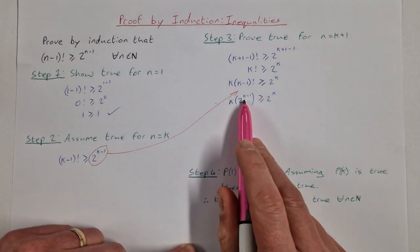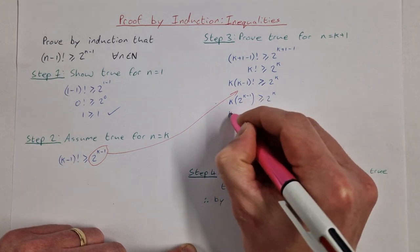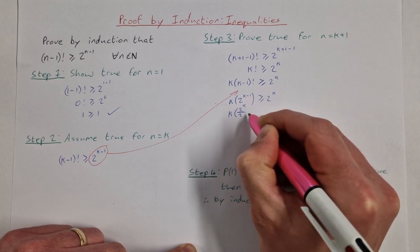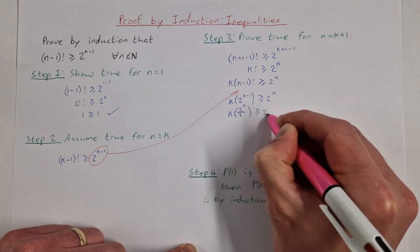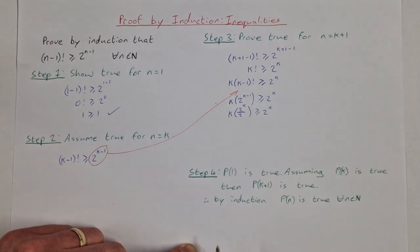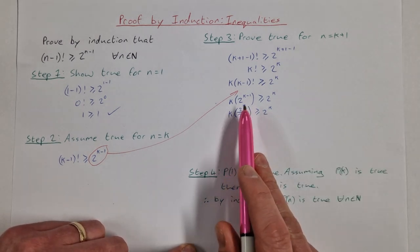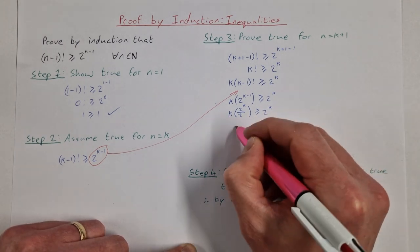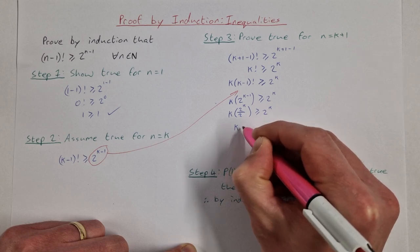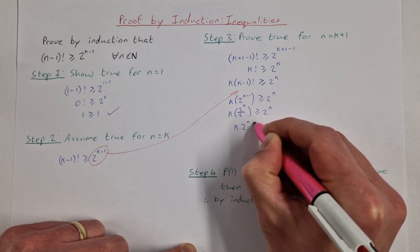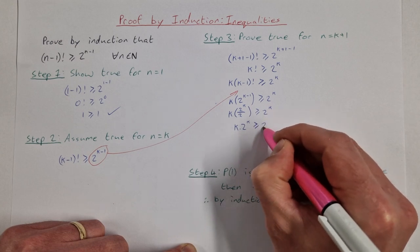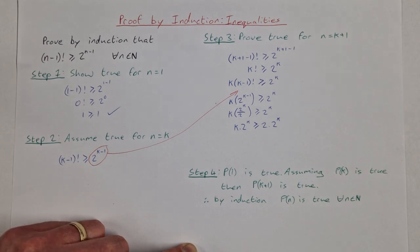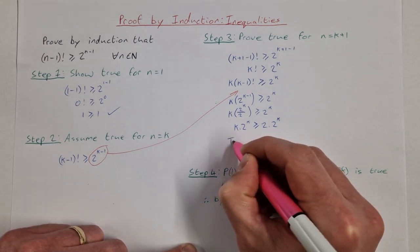Using the laws of indices, 2^(k-1) = 2^k ÷ 2^1, or just divided by 2, so we have k × 2^k / 2 ≥ 2^k. Multiplying both sides by 2, we get k × 2^k ≥ 2 × 2^k.